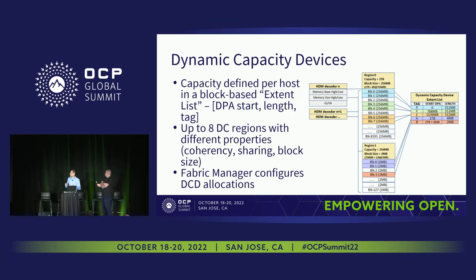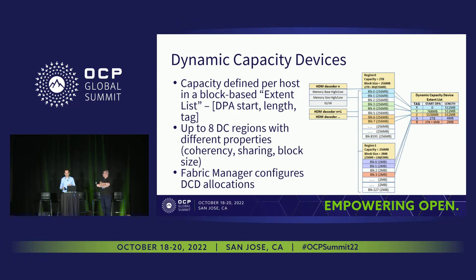A dynamic capacity device can support up to eight different regions with different properties. The sorts of properties that can be defined in a region include its coherency model — whether it supports the 3.0 back-invalidate, something we call hardware coherent versus software coherent — whether it's shareable, and the granularity of the block size. It'll be the fabric manager in the device that configures all these regions and figures out the allocations. The host then receives interrupts letting it know that allocations have changed.